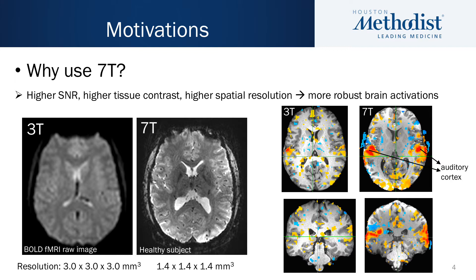For example, the images on the left show both fMRI raw images from a healthy participant. As you can see, the 7T image offers much more detail than a 3T because of the high spatial resolution.